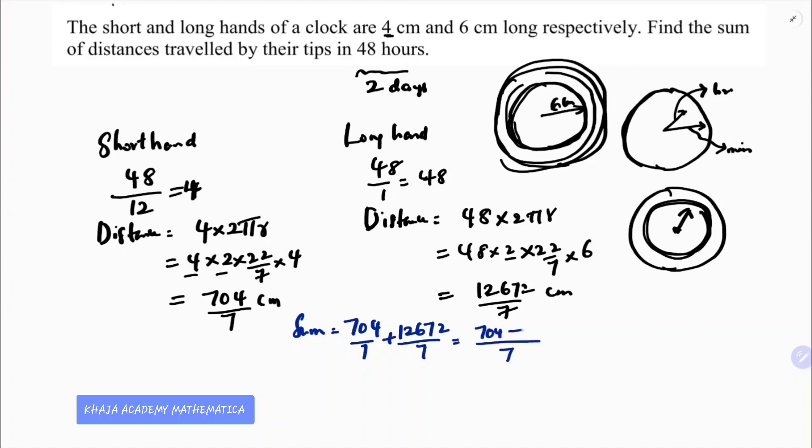704 plus 12672 will give you 13376 by 7. If you divide this value by 7, you will get 1910.85 centimeters.